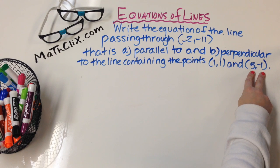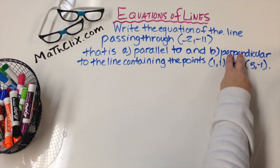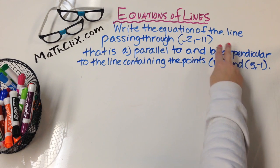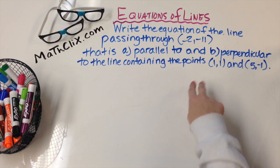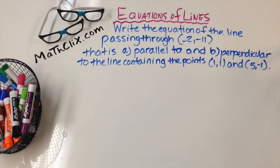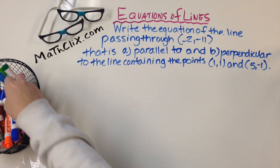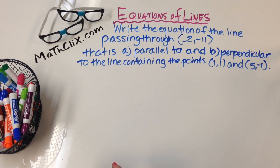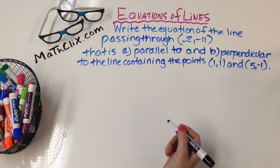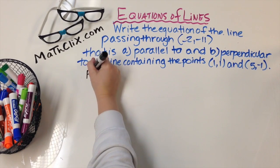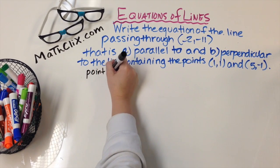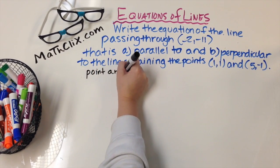And then we'll do the same thing — we'll write another equation of the line, but this time the line will be perpendicular to this line and it's going to pass through the point negative 2, negative 11. To start, you should remember that the only two things you need to write the equation of a line are a point and a slope.